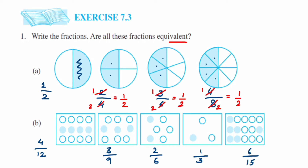Now I'll cancel each to its lowest form. Four upon twelve: four ones are four, four threes are twelve — equals one upon three. Three upon nine: three ones are three, three threes are nine — one upon three. Two upon six: two ones are two, two threes are six — one upon three. One upon three is already in reduced form, we cannot cancel further.